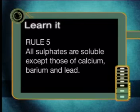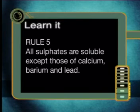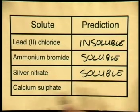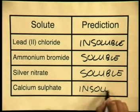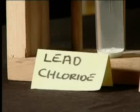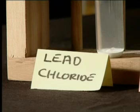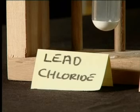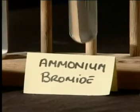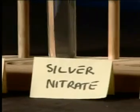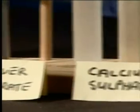Lastly we have calcium sulfate. Rule number 5 says all sulfates are soluble except those of calcium, barium and lead. I'm sure you can predict that calcium sulfate will be insoluble. Let's record our last prediction: calcium sulfate is insoluble. Now that we have made the predictions, let's see if they hold true. For lead chloride we predicted insoluble — you can see that this is true. Ammonium bromide is soluble, just as we predicted. Silver nitrate is also soluble, while calcium sulfate is insoluble.